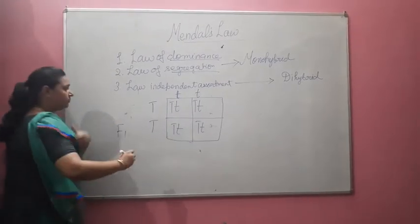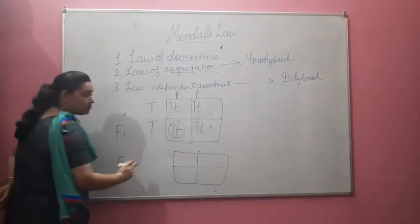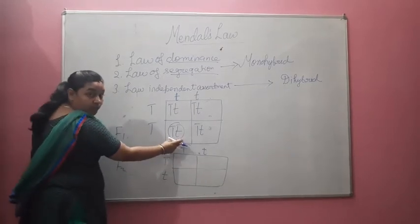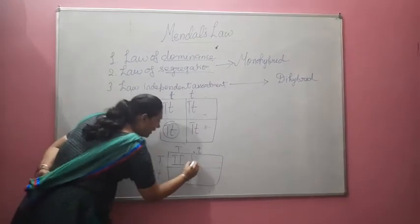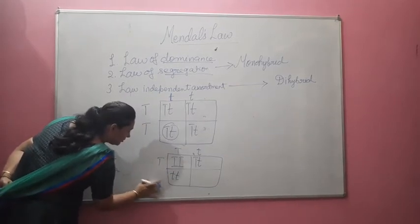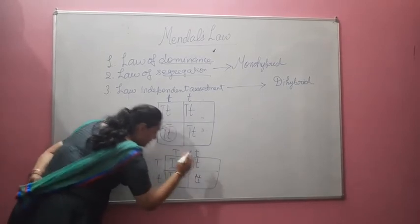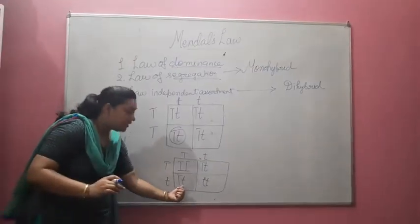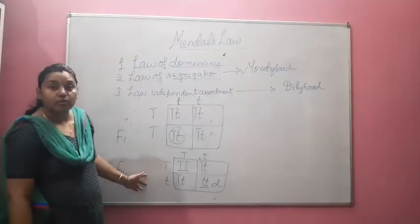If you do F2 by selfing, you will find that two TDs — one complete tall plant — plus two plants which are tall but carry the hidden dwarf character, plus one pure dwarf. So from this cross you can see: one is a pure breed of tall, two are tall but with a hidden character of the dwarf plant inside, and one is pure dwarf.